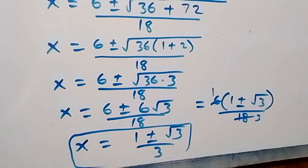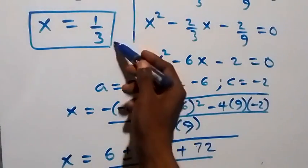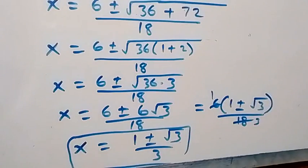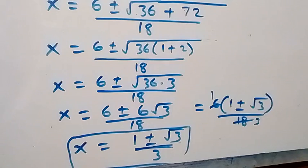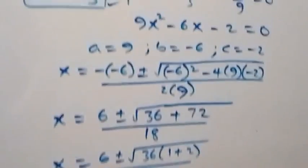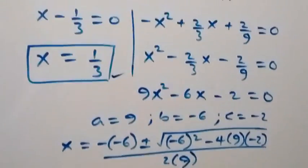We have 2 other values of x from this side, and altogether we have 3 solutions: x equals 1 over 3, x equals (1 + root 3) over 3, and x equals (1 − root 3) over 3. Thank you for watching, don't forget to subscribe for more videos, turn on notifications, share this video, give a thumbs up — see you next class, bye for now.